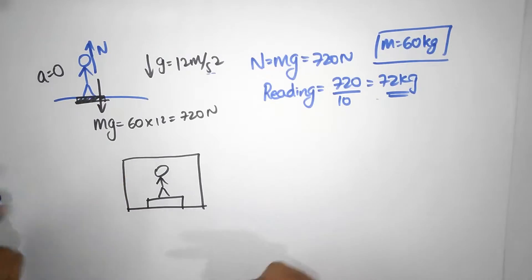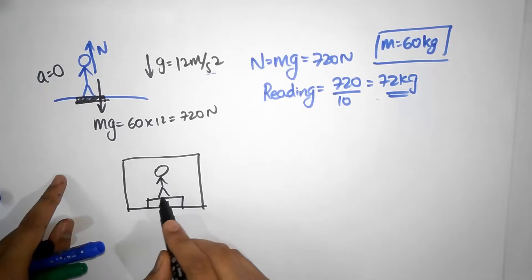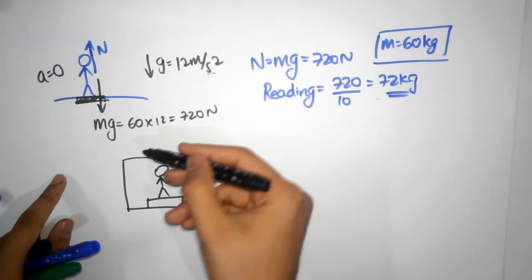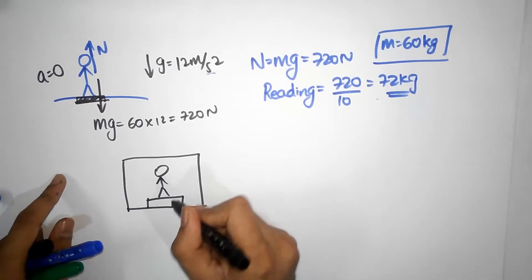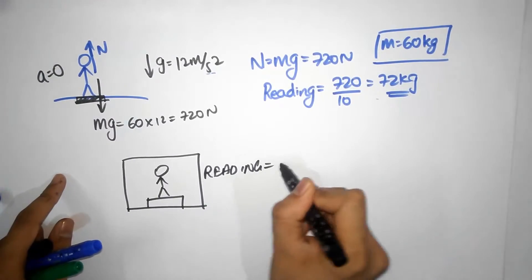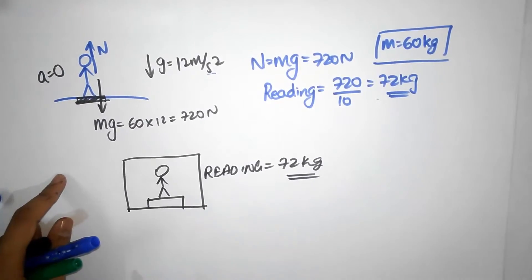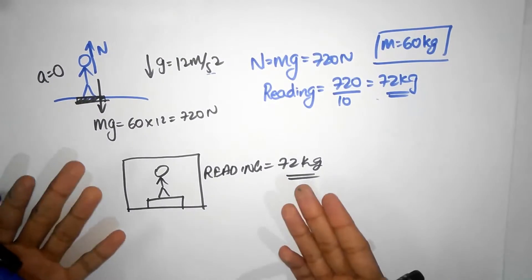So you have no idea what's going on. This whole thing is blacked out and you can't see outside. And you stand and you know your mass, that's 60 kilograms, and you see the reading. The reading turns out to be 72 kilograms, and you can't look outside the box.